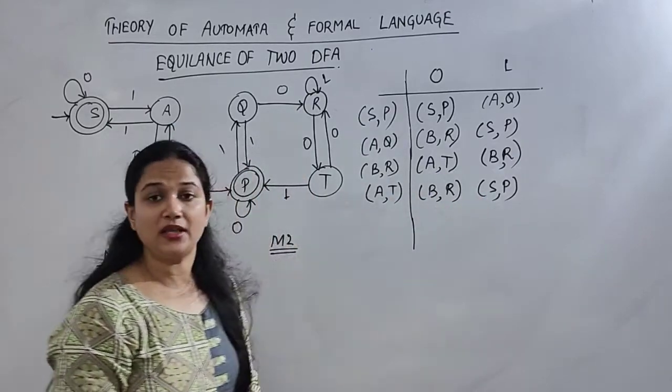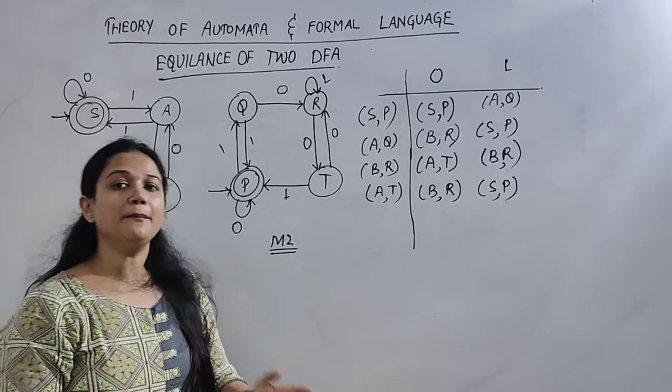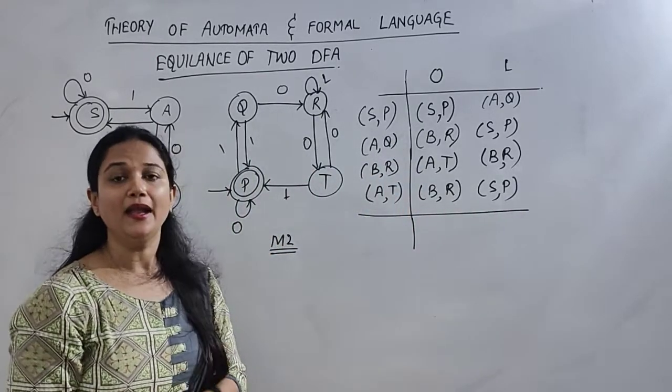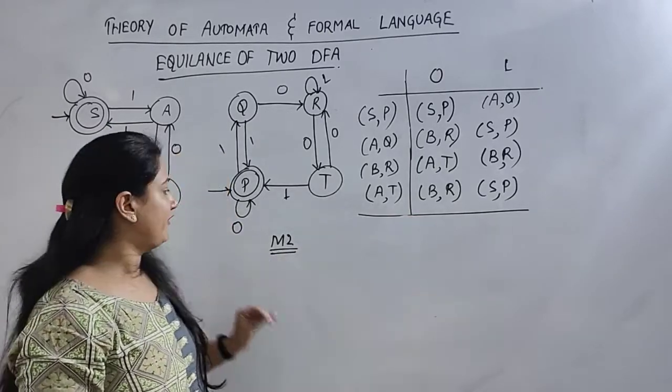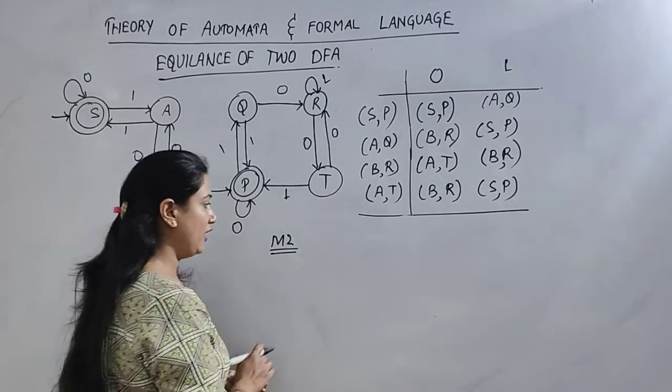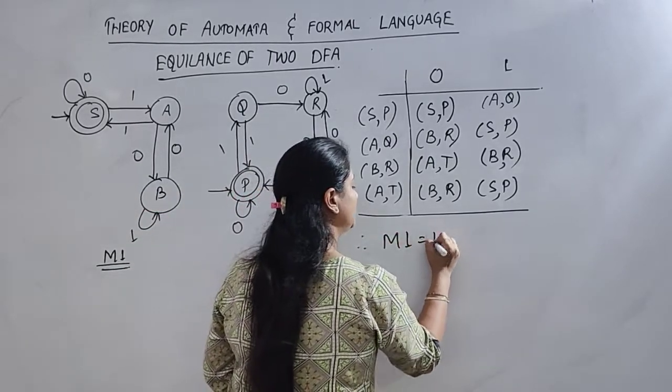And the entries here were all compatible pairs. If they were all compatible pairs, and your table has ended here, it means that both the DFAs, M1 and M2, are accepting the same languages. Therefore, M1 is equal to M2.